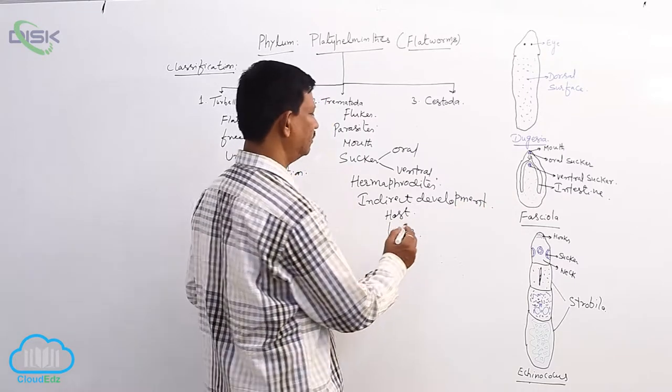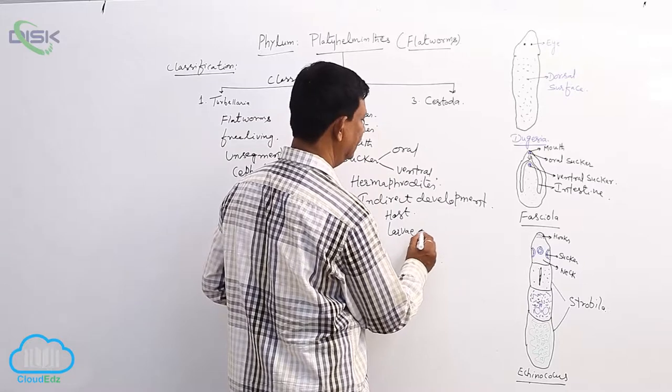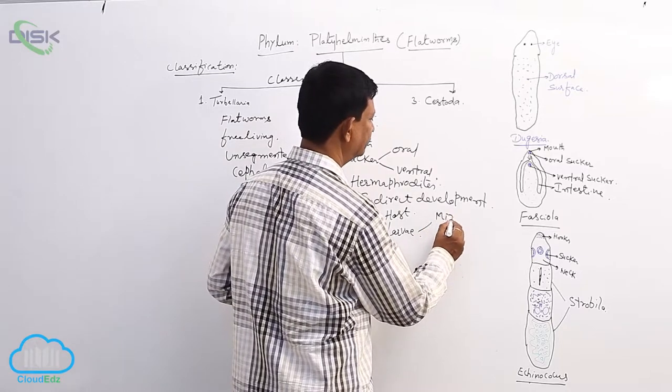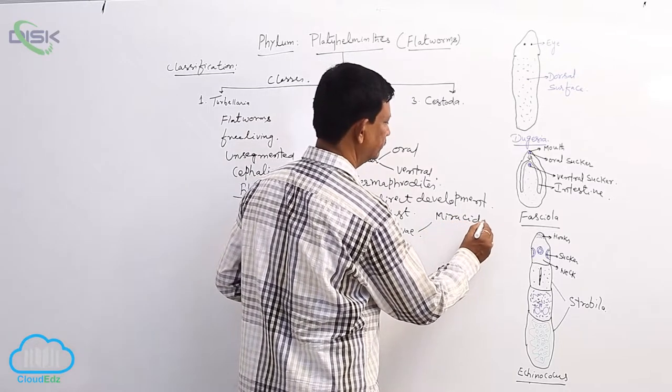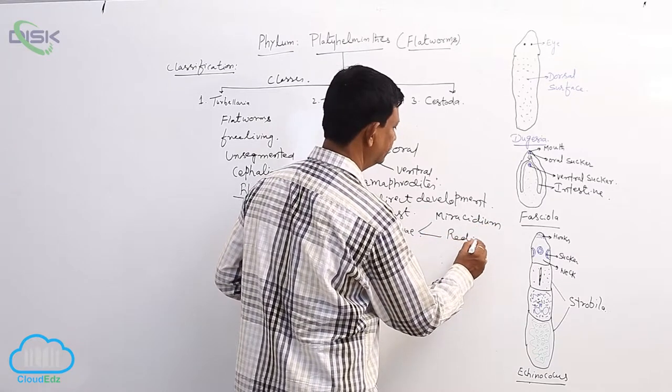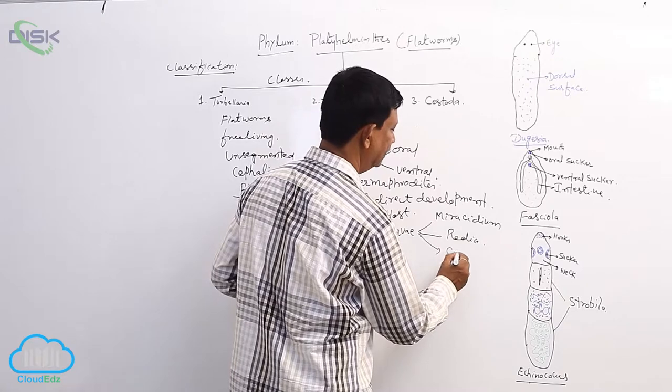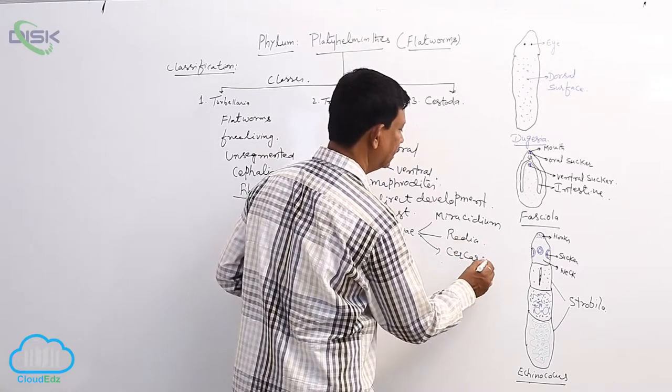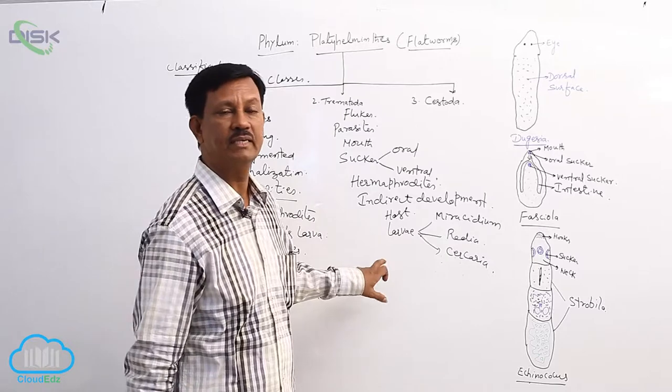There are different types of larval forms present in the life history. They are Miracidium larva, Radia larva, Sporocyst, Cercaria larva, and sometimes Metacercaria larva is also present.